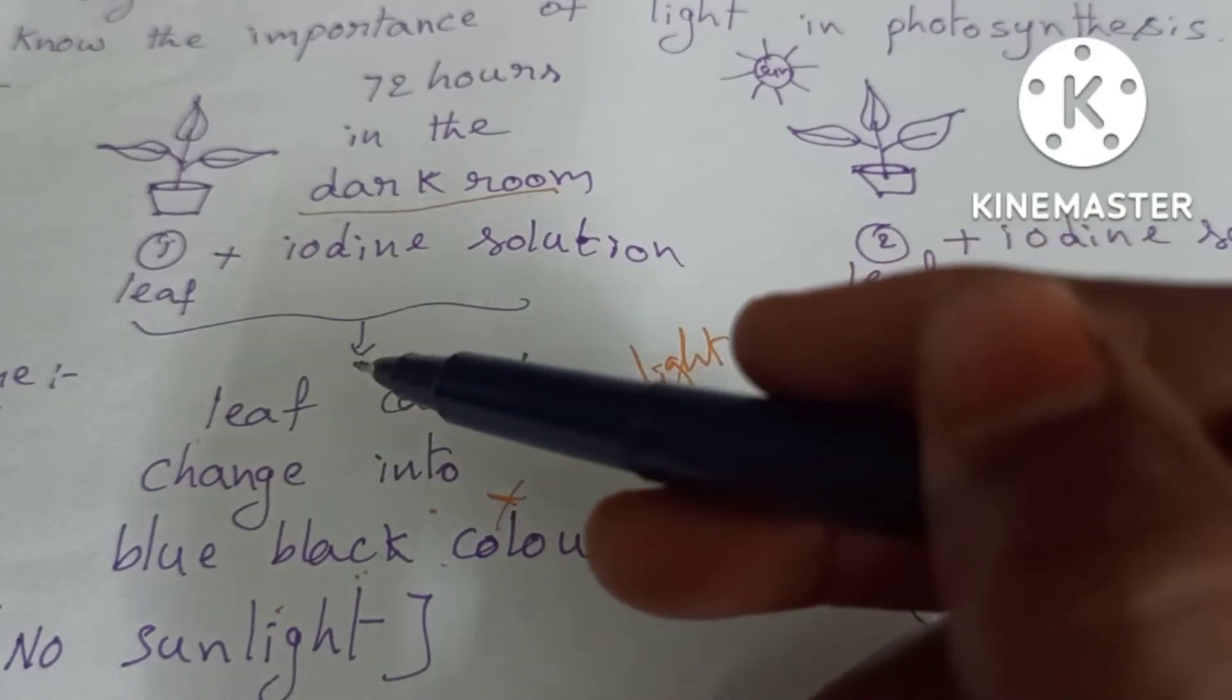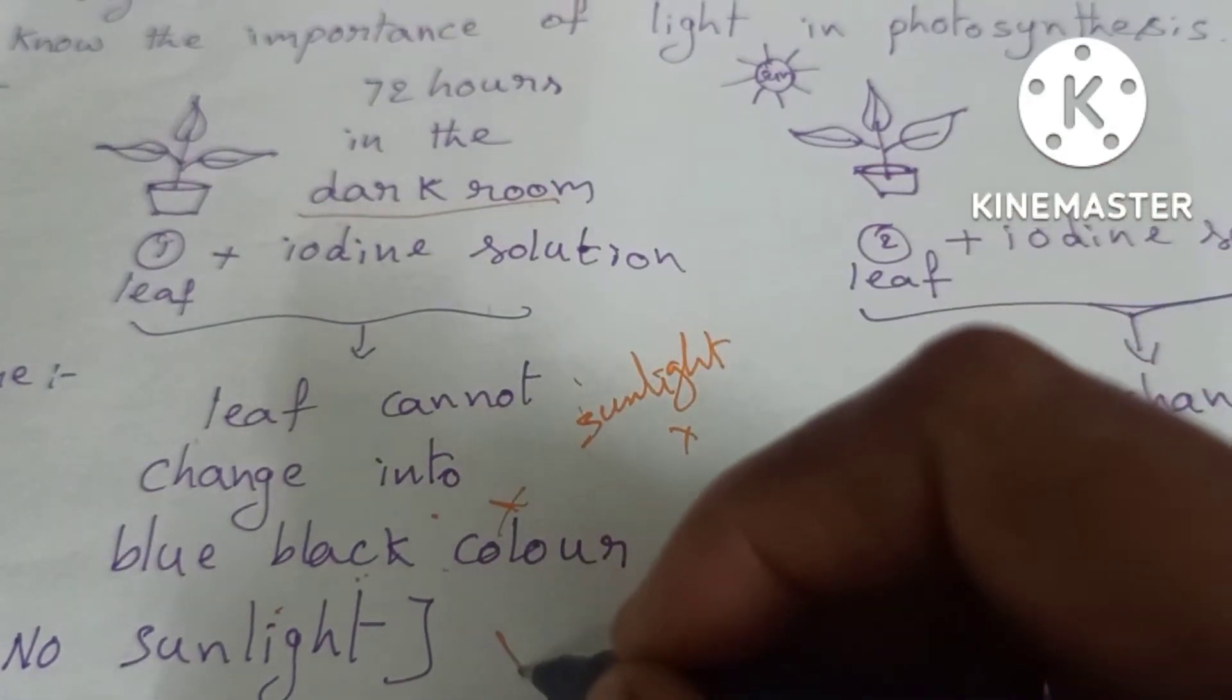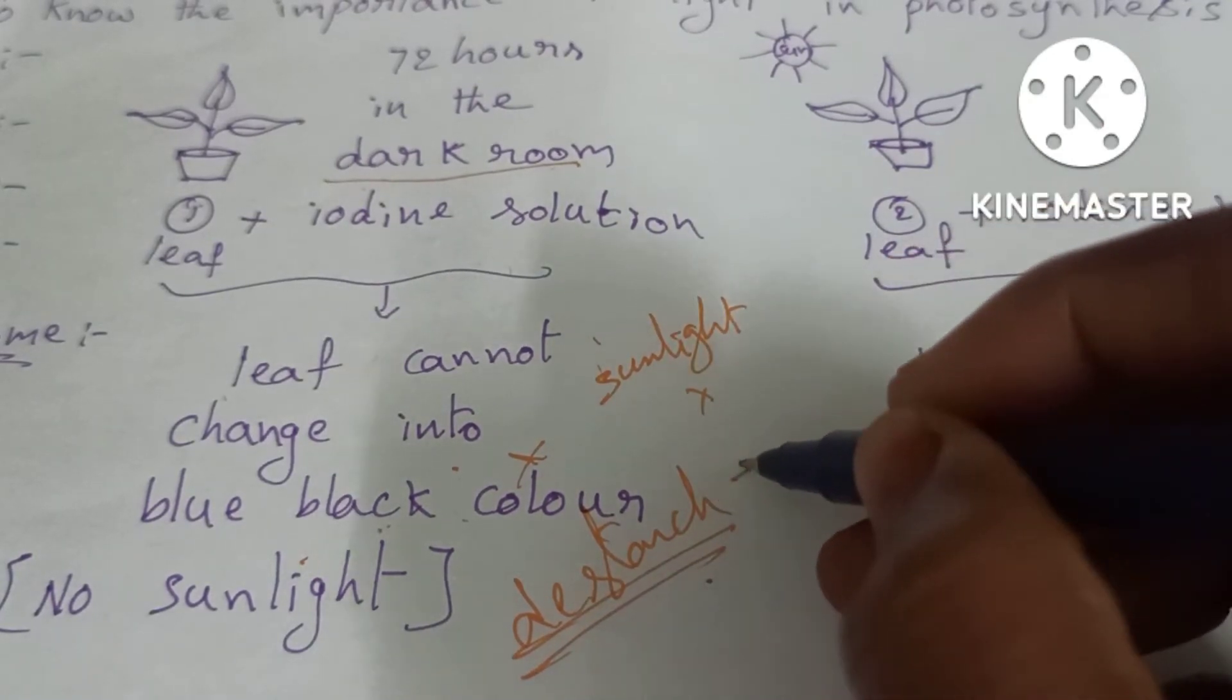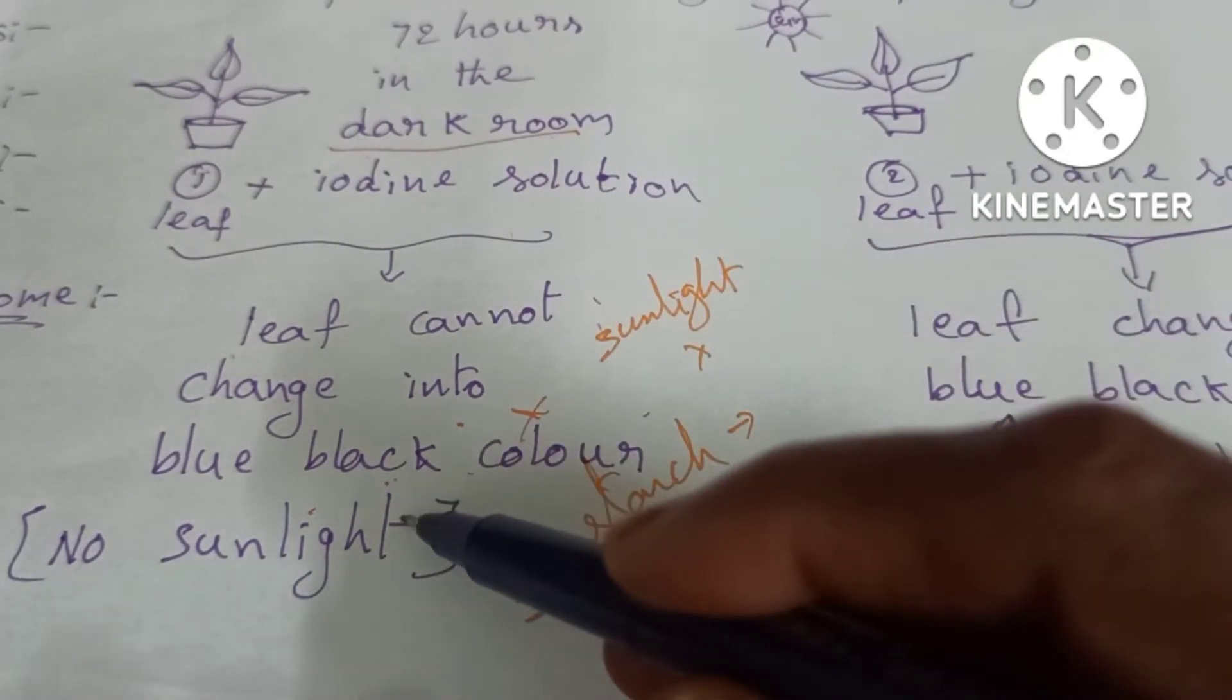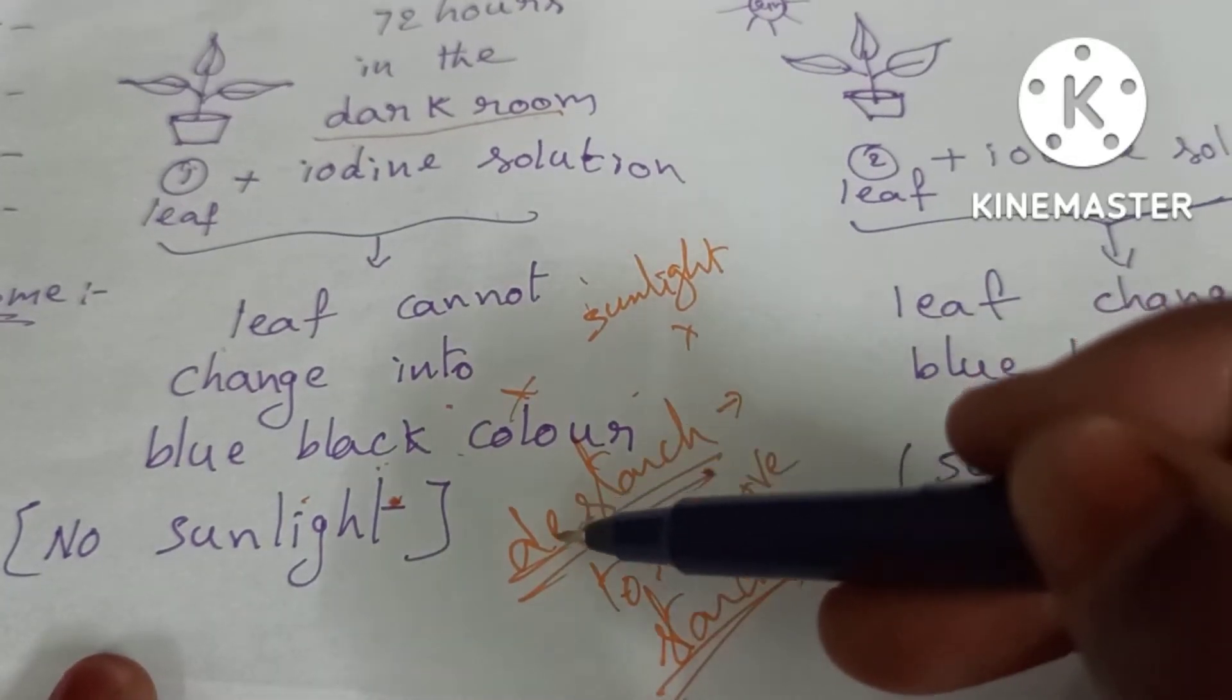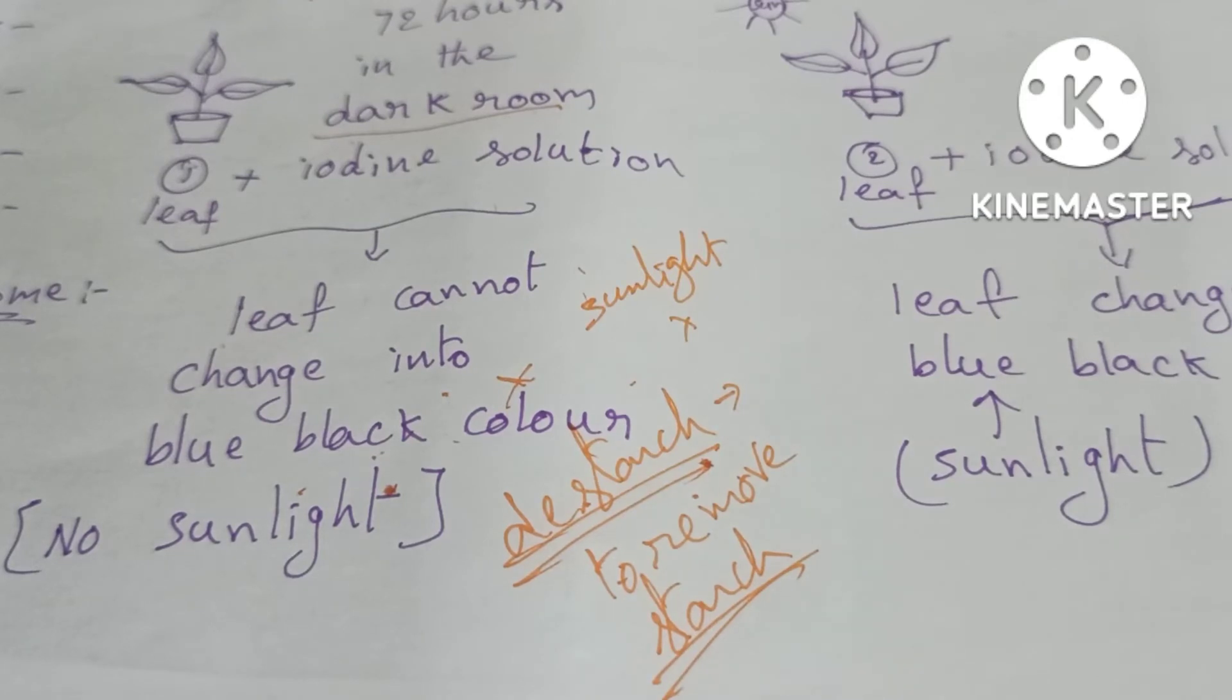We need to remove the starch. Why we kept it in the dark room is for destarching. The starch molecules are removed when we keep it in the dark room, so we can clearly see the iodine blue-black color in the experiment.